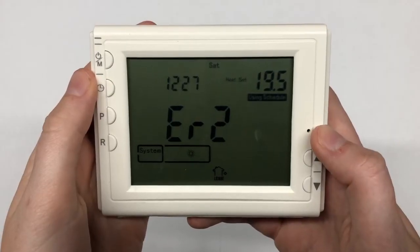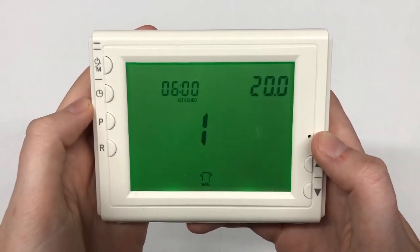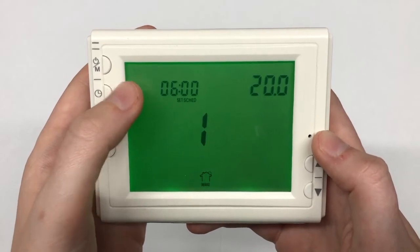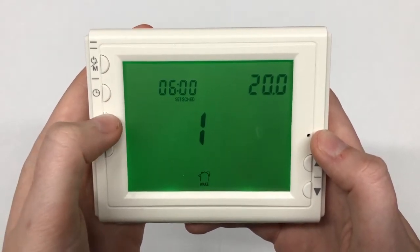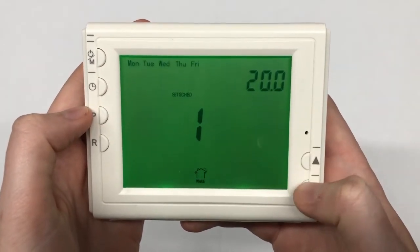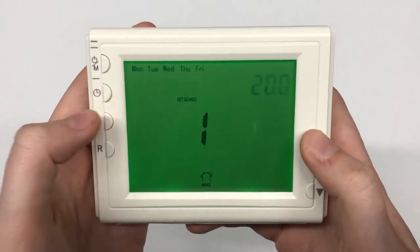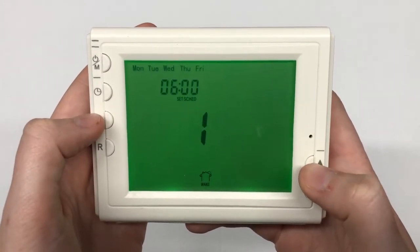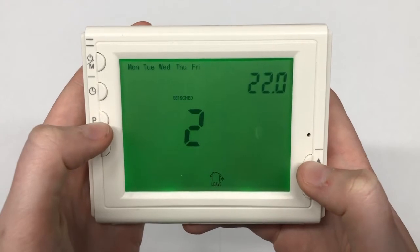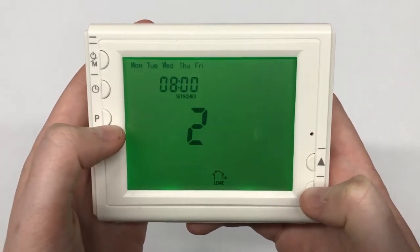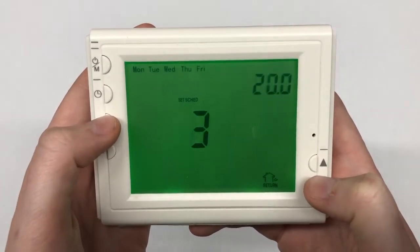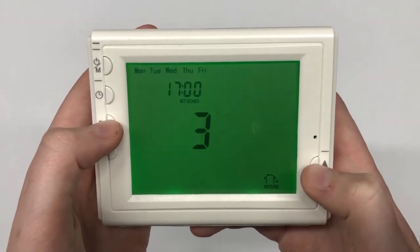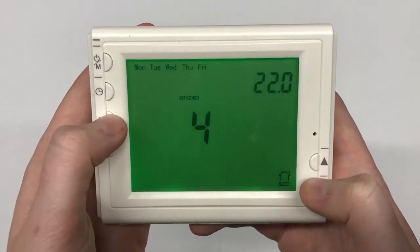To adjust the program on your controller, just click P to enter programming mode. First, we're doing Monday to Friday from 6am. Click P again to adjust the time, and then P again to adjust the temperature. I'm just going to go ahead and adjust all the temperatures to 21 degrees, but this is just an example of how you can set up your program and not how you have to do it.